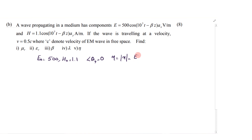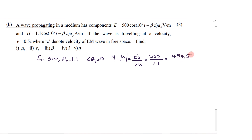The modulus of eta equals E0 divided by H0, which is 500 divided by 1.1. We have calculated the value of eta, and the value will be 454.54. This is the magnitude of eta.